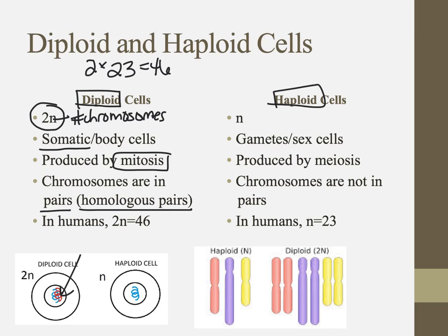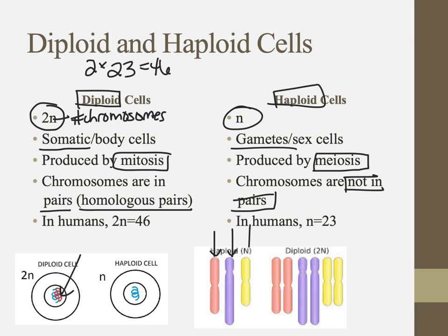Haploid cells really just refers to our gametes, and we call those N, where N is the number of chromosomes. These are the cells produced not by mitosis, but by meiosis — we'll talk more about that in the next chapter. This is when chromosomes are not in pairs. A haploid looks like this, where we don't have both the maternal and paternal DNA — we just have one or the other.